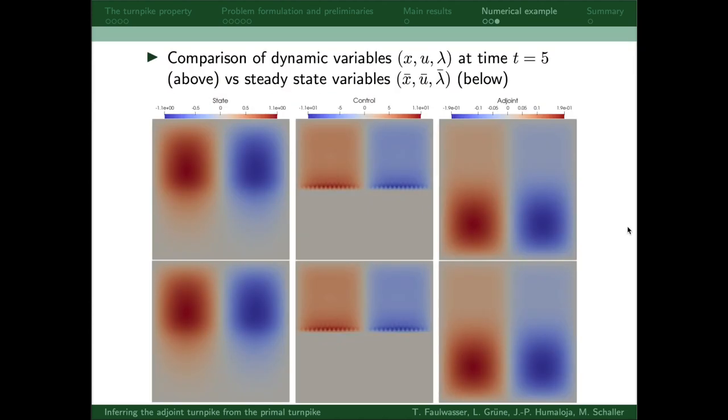Here's another figure from the simulation. So we compared the solution of the OCP at the time instance 5 to the solution of the corresponding steady state problem, and you shouldn't be able to see any difference between the dynamic variables here compared to the static variables here.